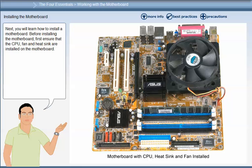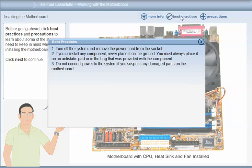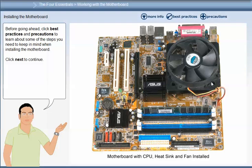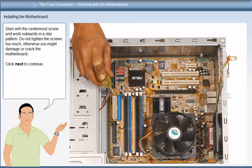Before installing the motherboard, first ensure that the CPU fan and heat sink are installed on the motherboard. Next, place the motherboard in the system case and secure it with the screws that came with the case. Start with a center screw and work outwards in a star pattern. Do not tighten the screws too much, otherwise you might damage or crack the motherboard.